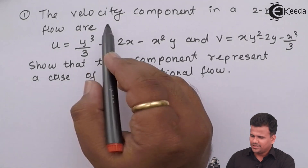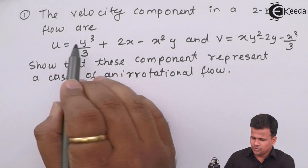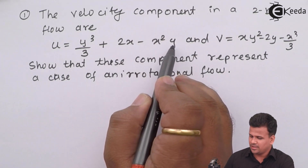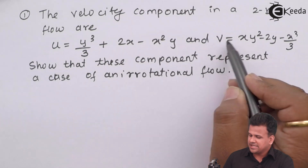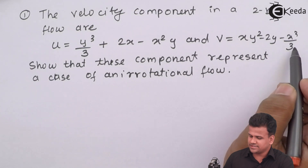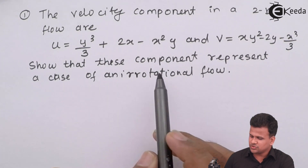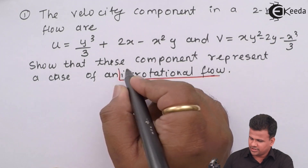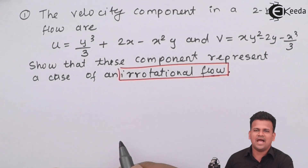We have a problem over here. The velocity component in two dimensions are: U equals Y³/3 plus 2X minus X²Y, and V, that is velocity along Y direction, is XY² minus 2Y minus X³/3. We have to show that it represents a case of irrotational flow — so there are two things: irrotational and flow.